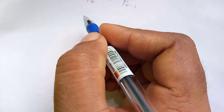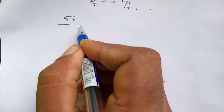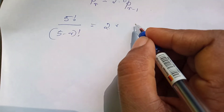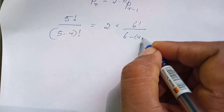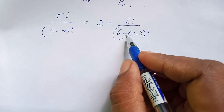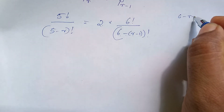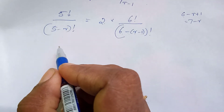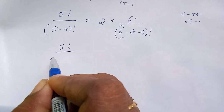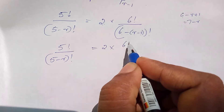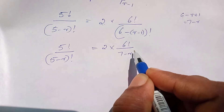Find r if 5Pᵣ equals 2 into 6Pᵣ₋₁. Using the formula: 5Pᵣ equals 5 factorial by (5 minus r) factorial. And 2 into 6 factorial by (6 minus r minus 1) factorial.